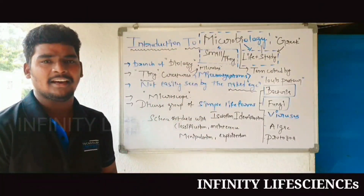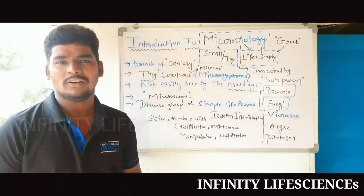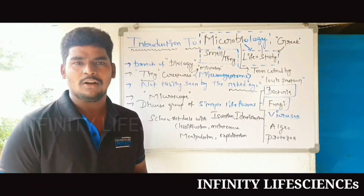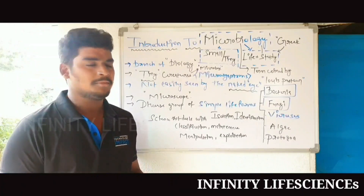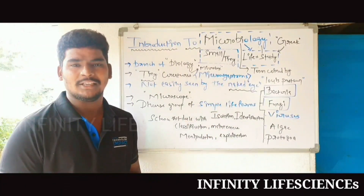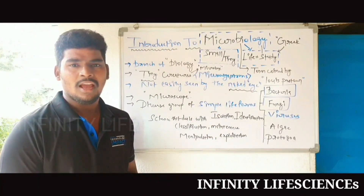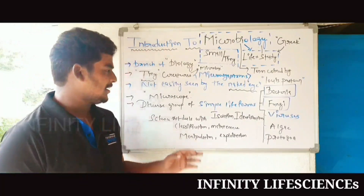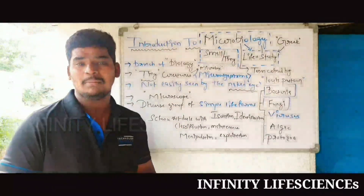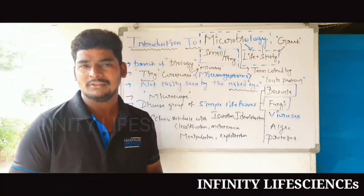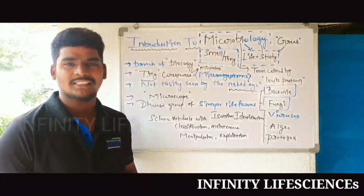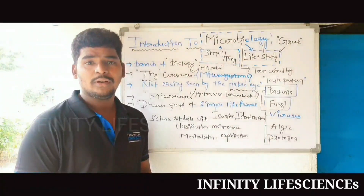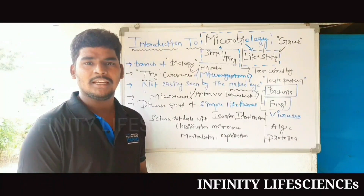Microorganisms are tiny creatures — organisms very small in size — which are not easily seen by the naked eye. We cannot see them with our direct eye; their sizes are very small, hence the term microorganism is assigned to them. With the help of magnifying devices like a microscope, we can see them.